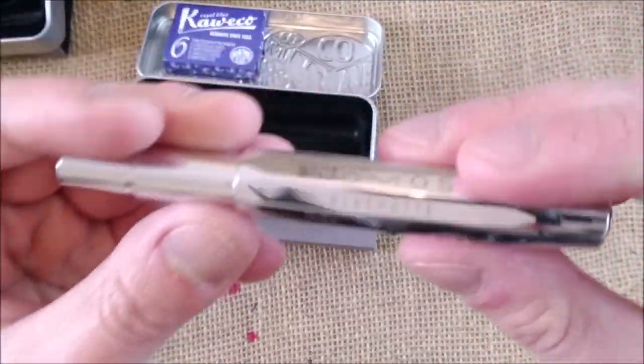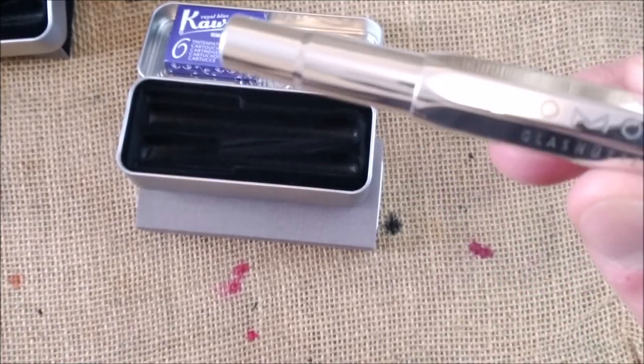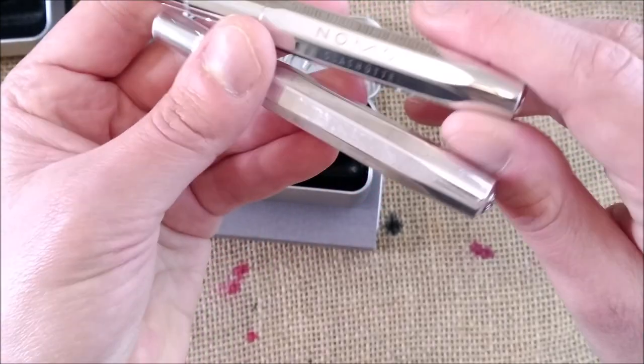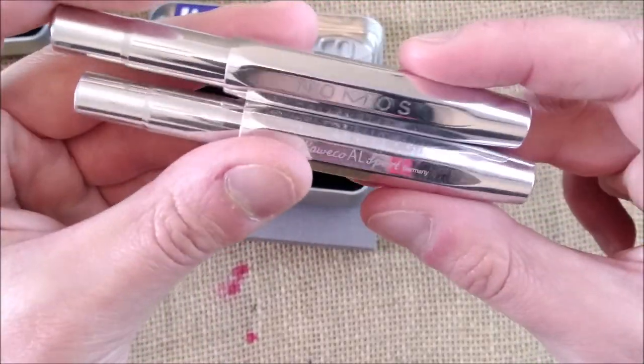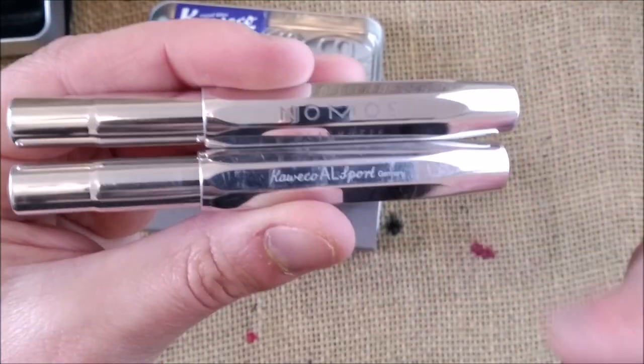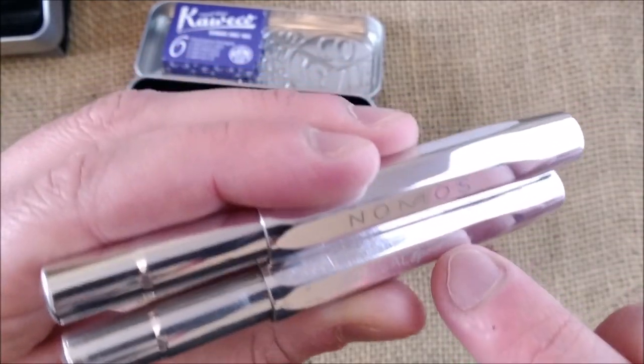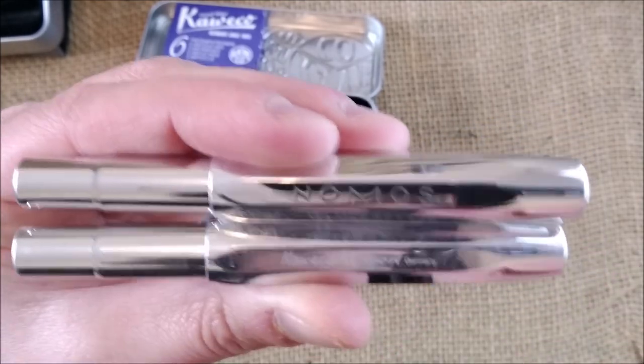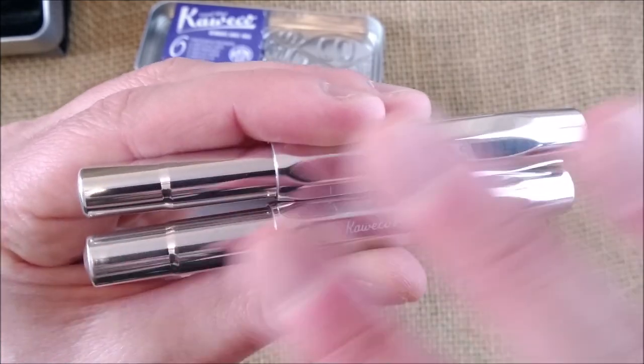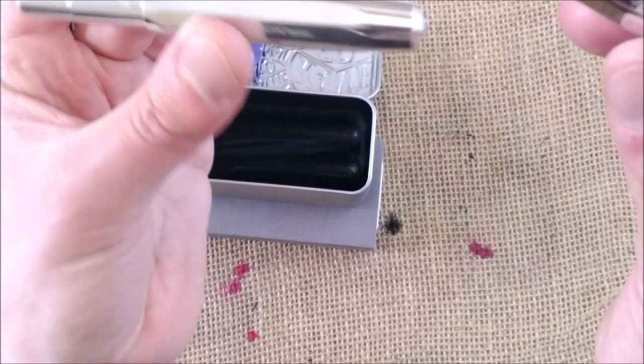This pen gets scratched very easily so I'll show you mine. This is my AL Sport Raw and here it is compared with the other one. This one is like mirror finish and this one is already quite scratched but they are the same pen. This one has a white engraving there saying Kaweco AL Sport Germany. This one doesn't say Kaweco Sport only Nomos Glashütte and nothing more.